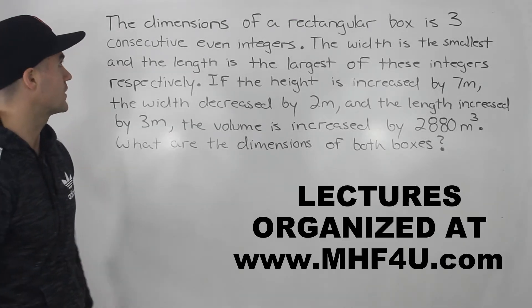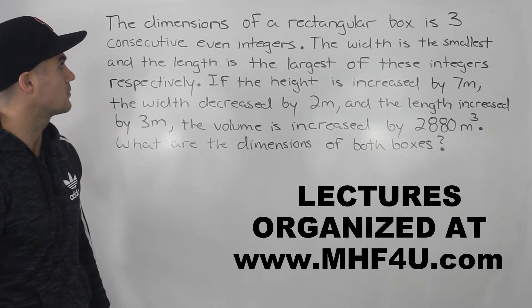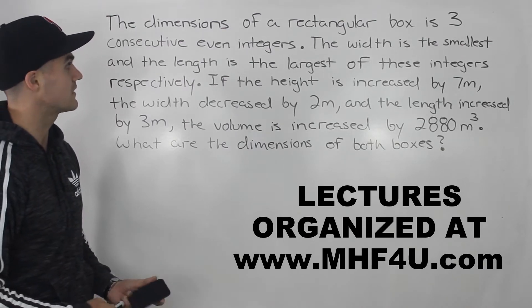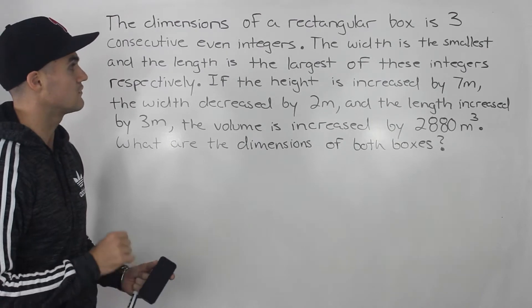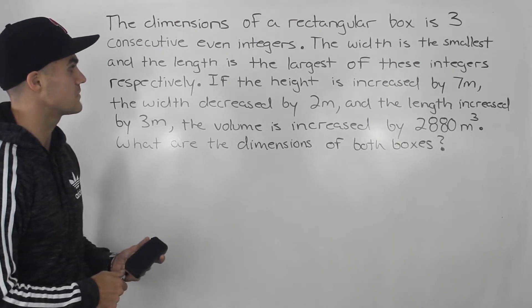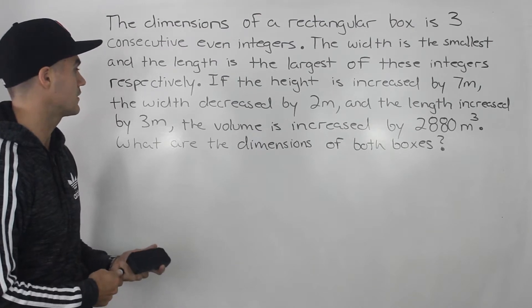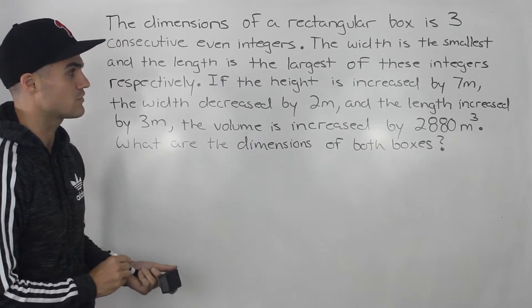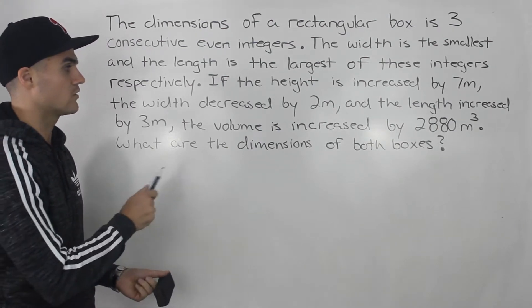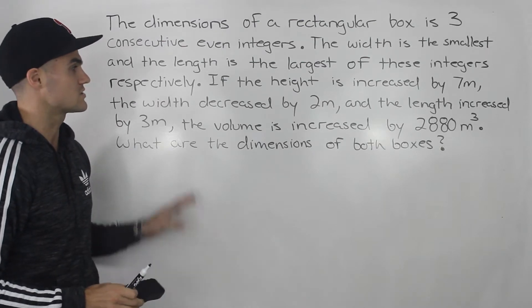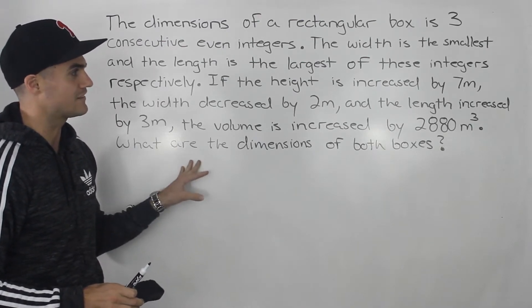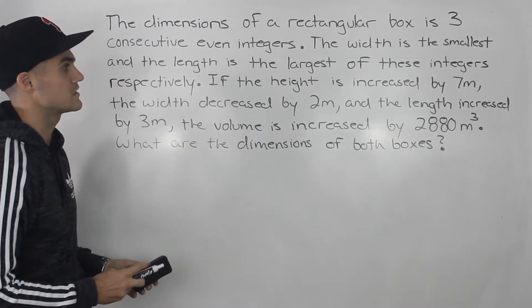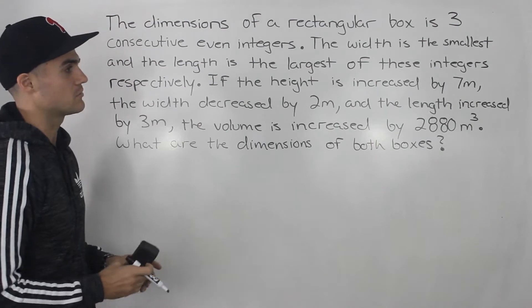Welcome back everybody. Moving on to another question. The dimensions of a rectangular box are three consecutive even integers. The width is the smallest and the length is the largest of these integers. If the height is increased by seven meters, the width decreased by two meters, and the length increased by three meters, the volume of the box is increased by 2,880 meters cubed. What are the dimensions of both boxes? This question is definitely one of the toughest you can get in this unit — setting up the equation is going to be pretty difficult.